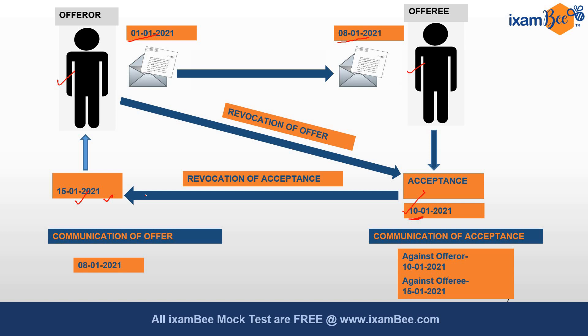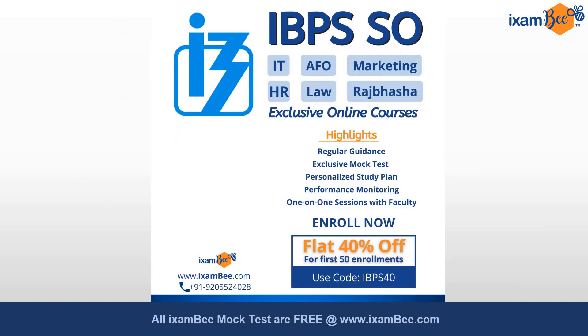Since the parties have made the offer and given their acceptance, they also have the option to revoke. A, the offeror, can revoke his offer before 10th January 2021. B, the offeree, has the option of revoking his acceptance between 10th January and 15th January, but not afterwards. So the acceptance can be revoked by the offeree up until 15th January.